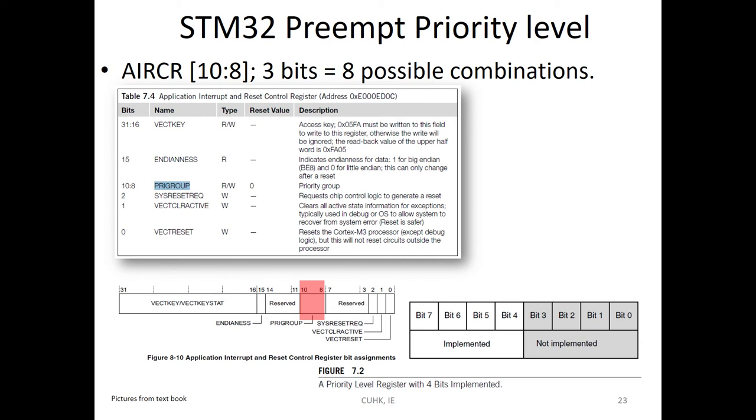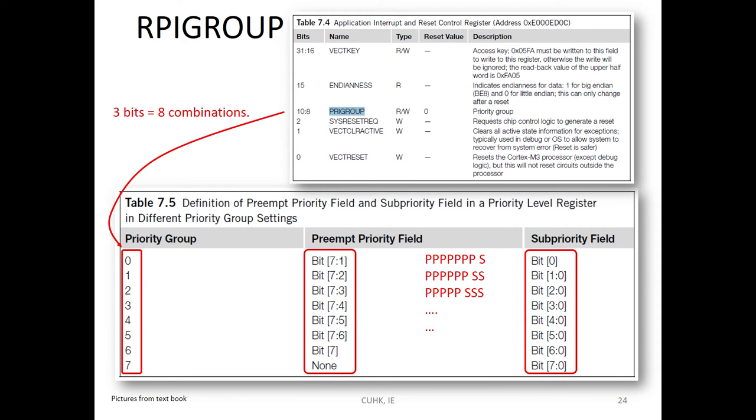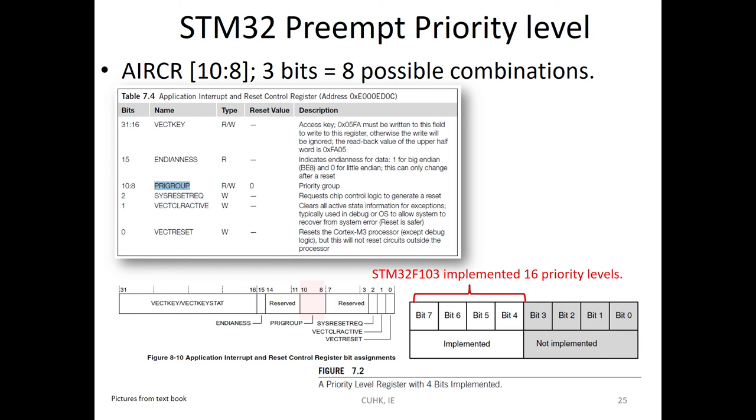The priority group register here, in this AIRCR, and only three bits: 8, 9, 10. Three bits to set that priority. Then three bits you can get the combination, eight combinations like this. You cannot understand. It means that PRIGROUP is 1, 2, 3 something like that. This is preemption priority, this is priority field.